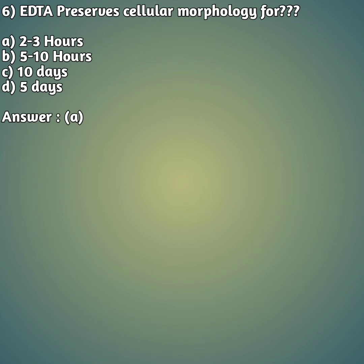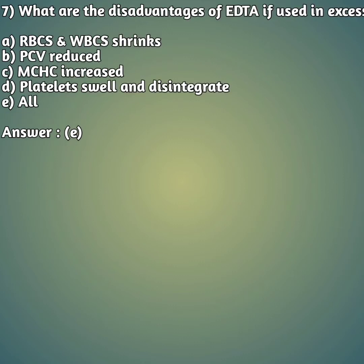Sixth question: EDTA preserves cellular morphology — for how long can EDTA store exact cellular morphology? Option A: 2 to 3 hours, option B: 5 to 10 hours, option C: 10 days, option D: 5 days. The right answer is option A — 2 to 3 hours. Up to 2 to 3 hours, EDTA can preserve cellular morphology correctly. After that, cells may get shrinkage or may get bulge.